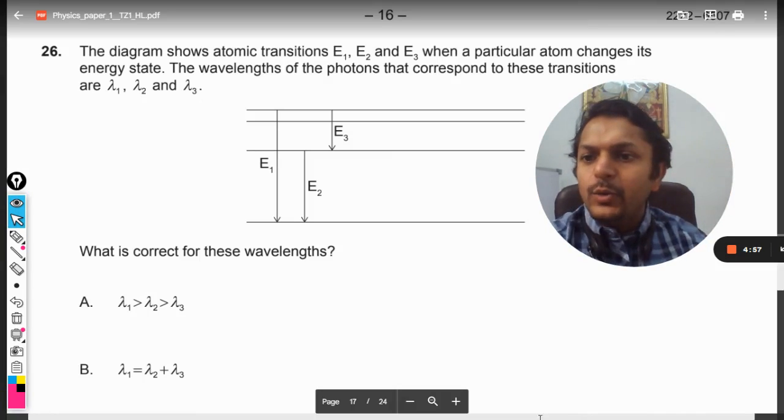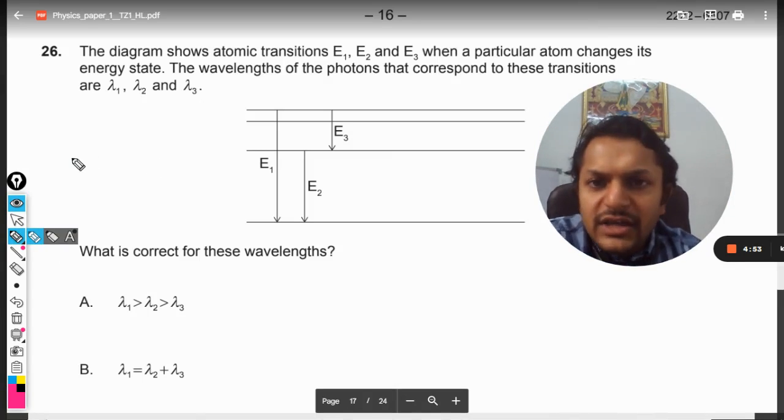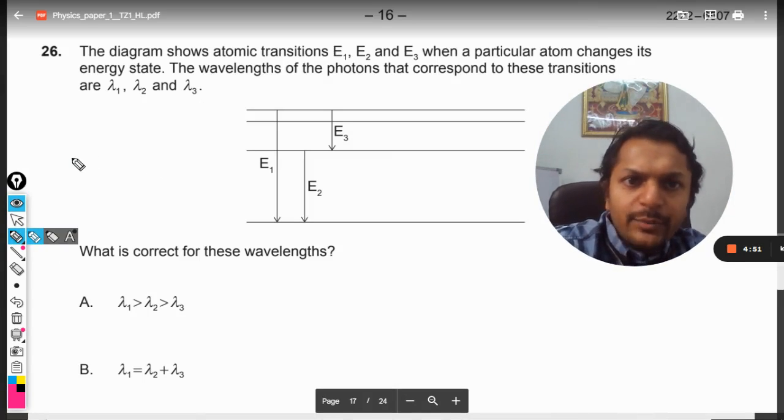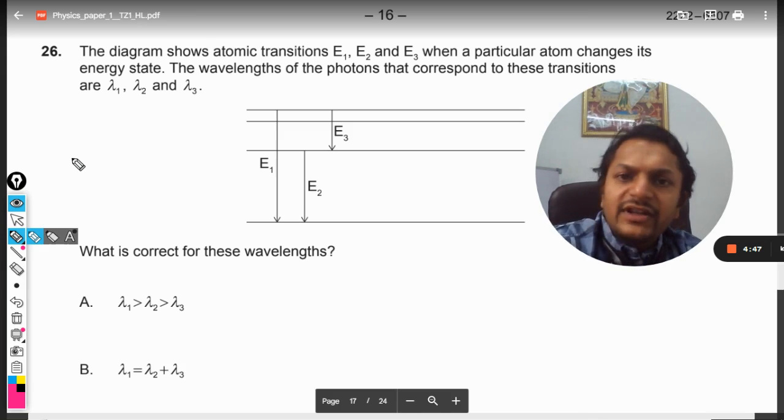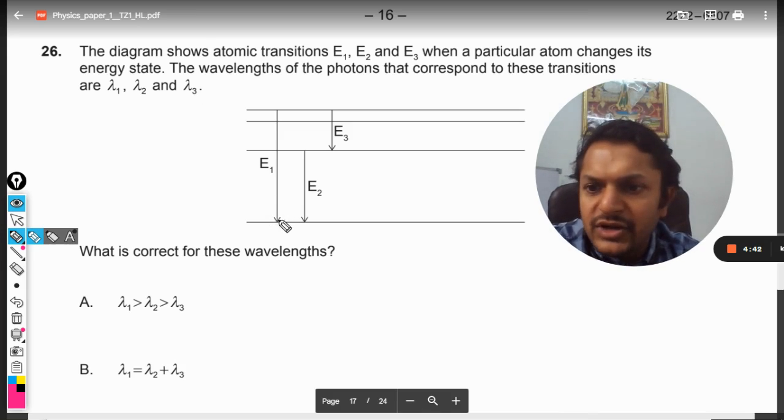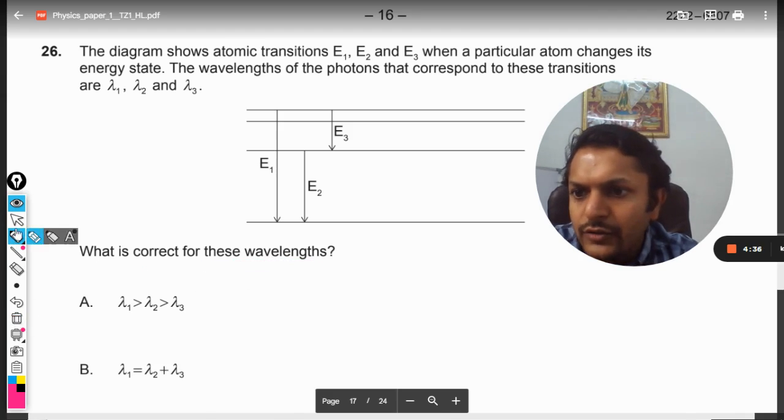Okay dear students, let us see what is this. The diagram shows the atomic transitions E1, E2, and E3. When a particular atom changes its energy state, the wavelengths of the photons that correspond to these transitions are lambda 1, lambda 2, and lambda 3. What is correct for these wavelengths?